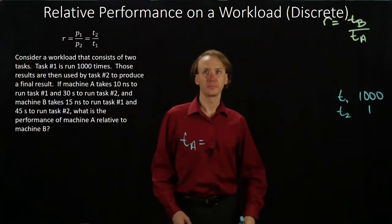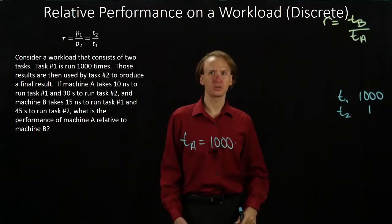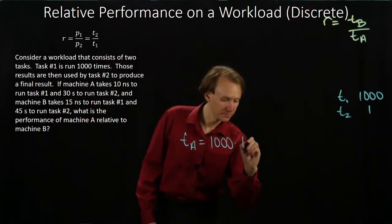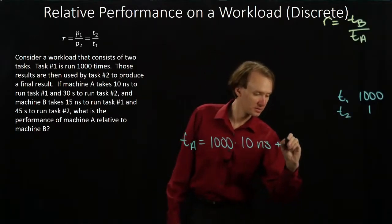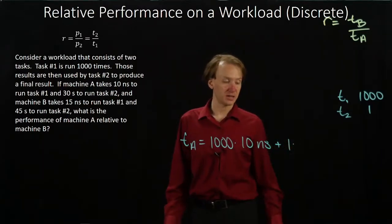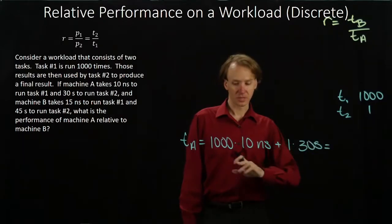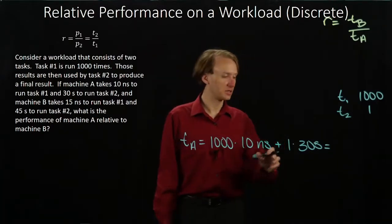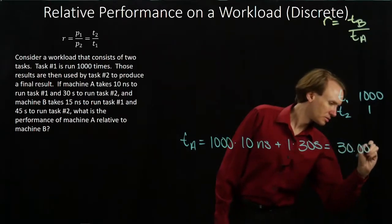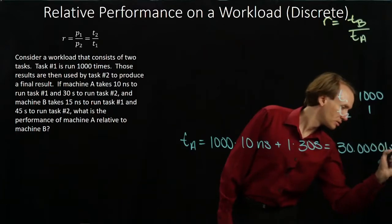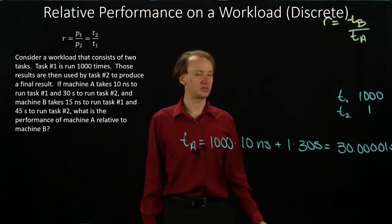So for machine A, we need to run task number one 1,000 times, and each of those require 10 nanoseconds. Then we'll run task number two once, which will take 30 seconds. 1,000 times 10 nanoseconds will give me 10 microseconds plus 30 seconds. So there's my 10 microseconds and my 30 seconds. Obviously the 30 seconds is dominating everything here.